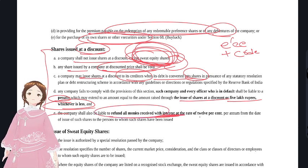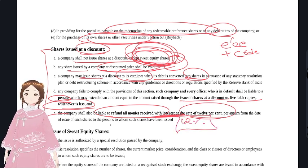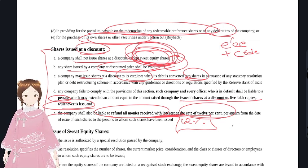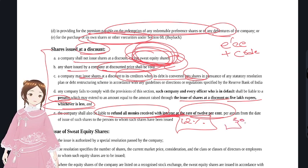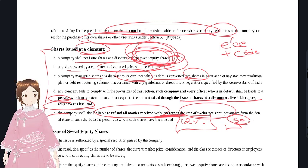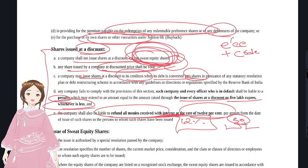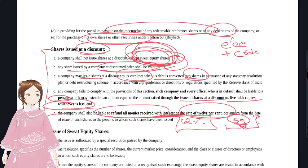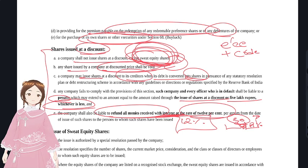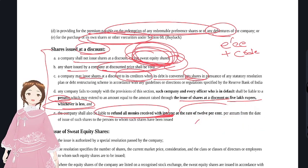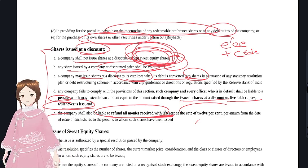The company shall also be liable to refund all money received with interest at 12% per annum. This 12% interest also appears elsewhere in the audit chapter - for example, when unpaid dividends are not transferred to a separate account within seven days, the company must pay 12% interest.